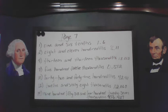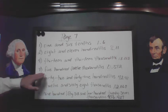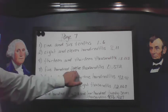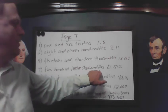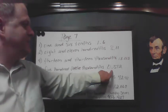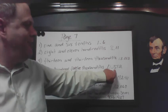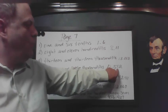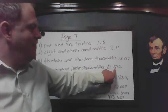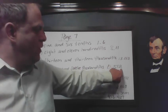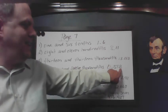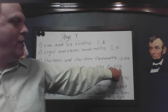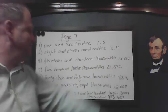Number seven is going to be five hundred twelve thousandths. So 0.512 — five hundred and twelve thousandths. It ends on the thousandths place.